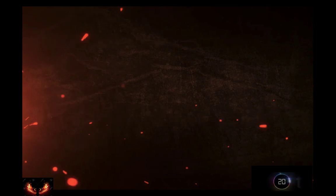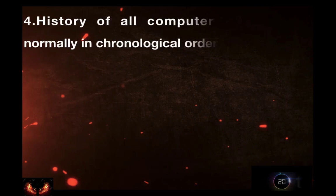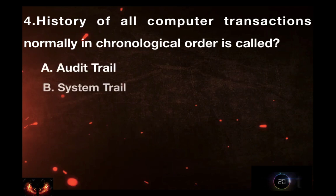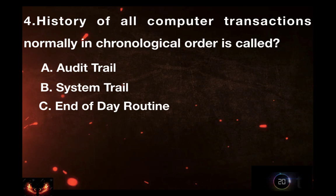Let's move on to the next question. A history of all computer transactions normally in chronological order is called: A) Audit trail. B) System trial. C) End of day routine. D) Transaction summary. Your time starts.